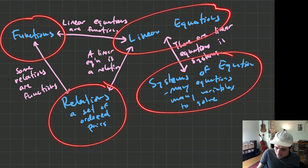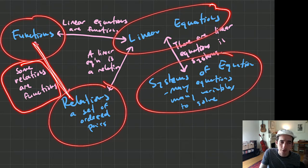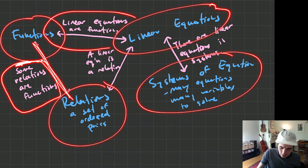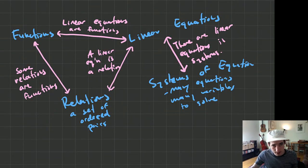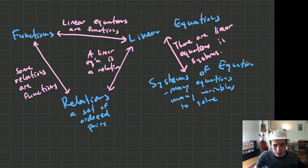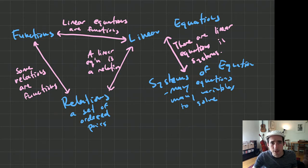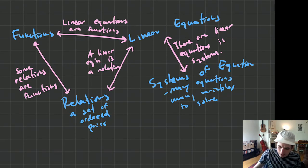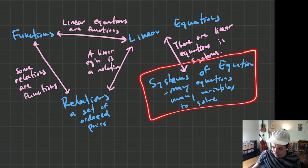The connections between the topics can be very brief. Between functions and relations you can just say some relations are functions. Linear equations are functions — that's their relationship, that's how they're connected. Linear equations and systems of equations: there can be linear equations in systems. You don't have to go super in depth into the connections or do a huge explanation of each topic. For example: we've got systems of equations, there's many equations, many variables to solve for.